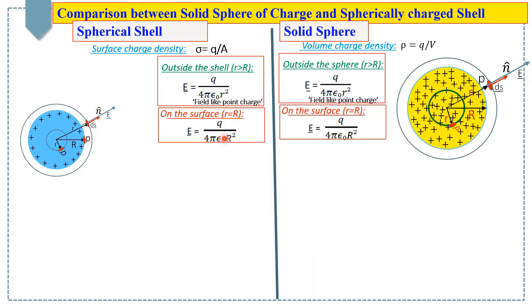Hence, at this point, we conclude that the electric field outside of the solid is the same as in the case of charged spherical shell and the electric field on the surface of a sphere is the same as in the case of a shell.